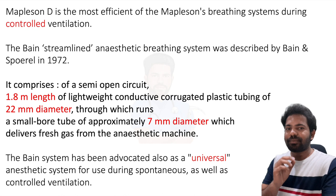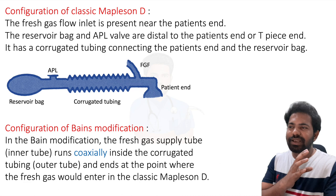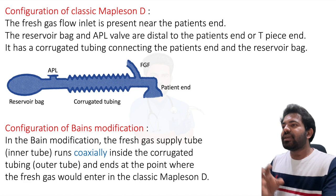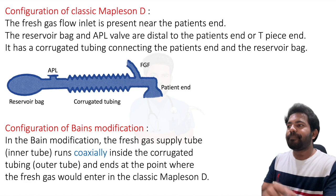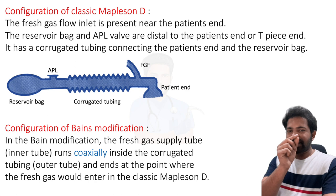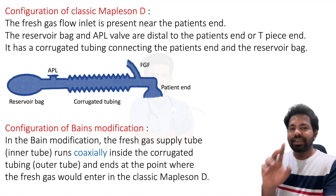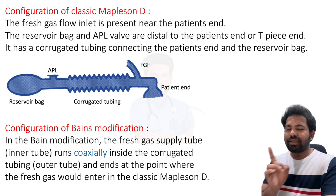In the classic Mapleson D configuration, the fresh gas flow inlet is present near the patient's end. The reservoir bag and the APL valve are distal to the patient's end. There is a corrugated tubing connecting the patient's end and the reservoir bag, with the fresh gas flow near the patient's end.